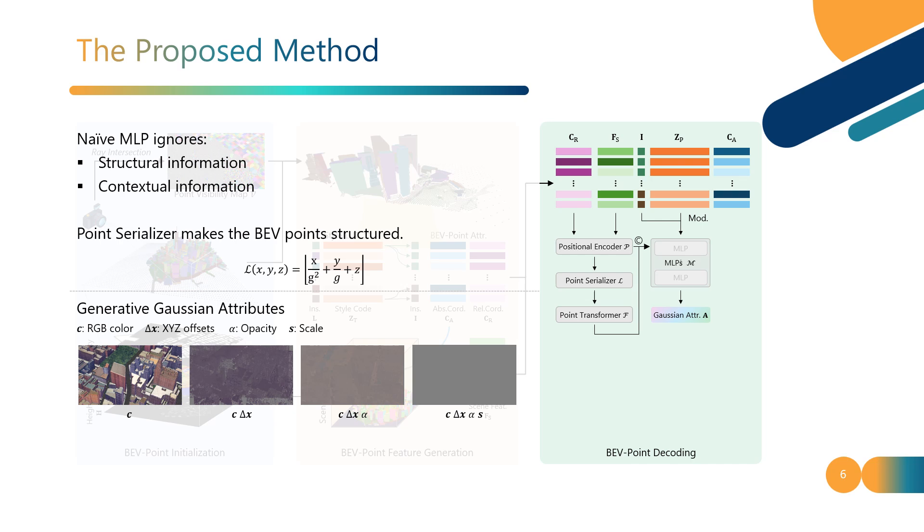Given the generated Gaussian attributes, the Gaussian rasterizer generates the rendered image. During training, the discriminator is employed to further improve the quality of generated images.